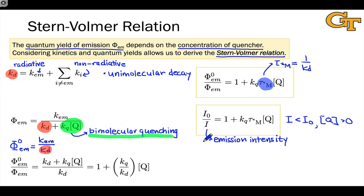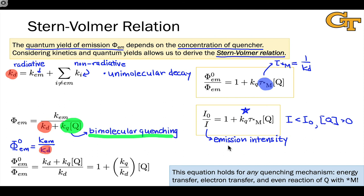The key quantity in a Stern-Volmer analysis is the KQ value — the rate constant for quenching. Sometimes we want to simply show that the excited state is being consumed by Q, and experimental data showing a linear dependence of I0/I on the molarity of Q provides strong evidence that Q is interacting with M*. This equation holds for any quenching mechanism — energy transfer, electron transfer, or photochemical reaction — which is a double-edged sword: it broadens applicability but means we cannot distinguish between quenching mechanisms from a Stern-Volmer analysis alone, since all would produce the same linear plot.